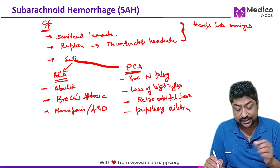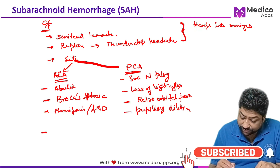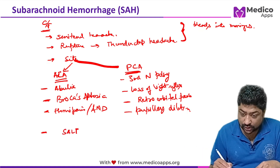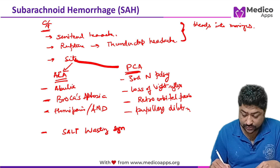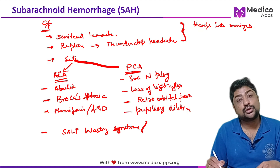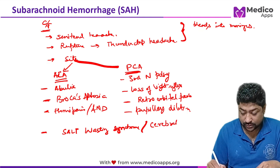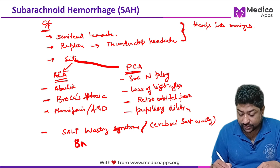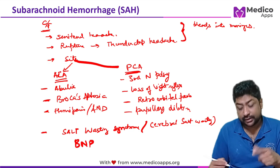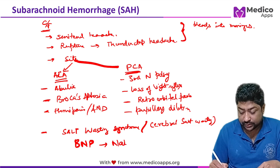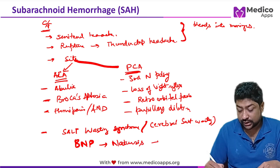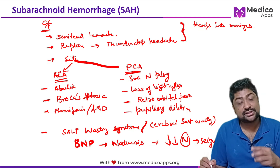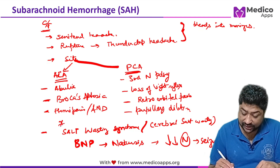Another very important concept frequently asked about SAH is cerebral salt wasting syndrome. Whenever there is brain injury, there is secretion of BNP — brain natriuretic peptide — which causes natriuresis, leading to a decrease in sodium levels, which in turn causes seizures. This is very frequently tested.